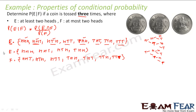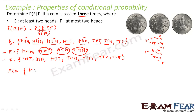This is my E and this is my F. The formula says I have to find the intersection of E and F. HHT is common, HTH is common, and THH is common. So my E intersection F will be HHT, HTH, and THH.